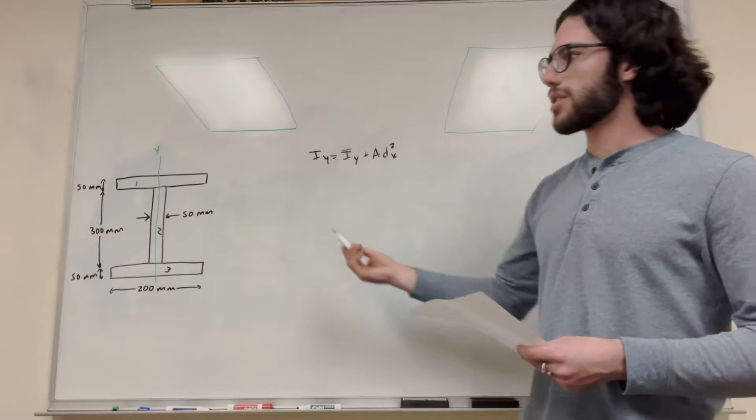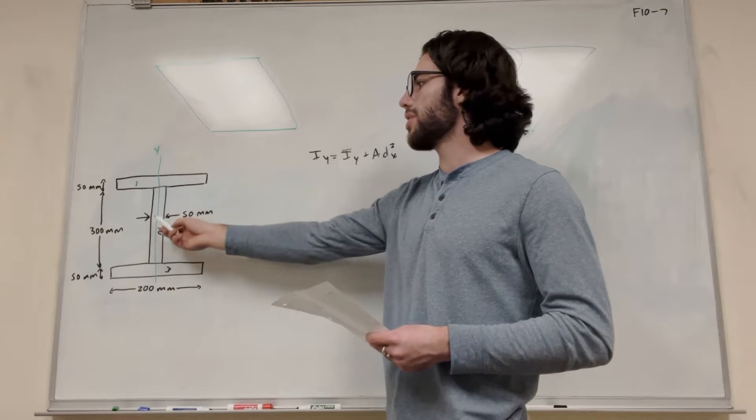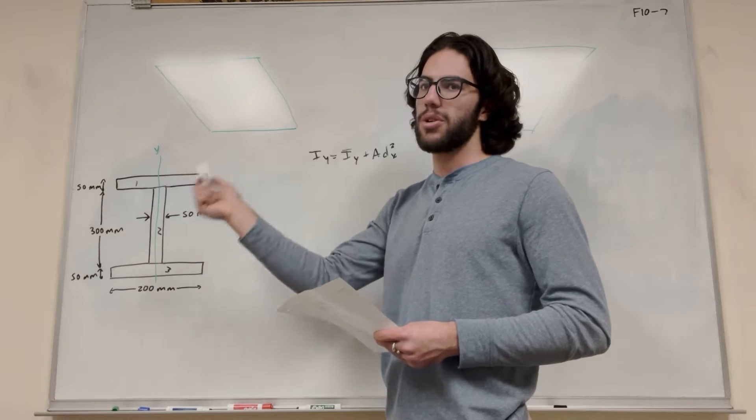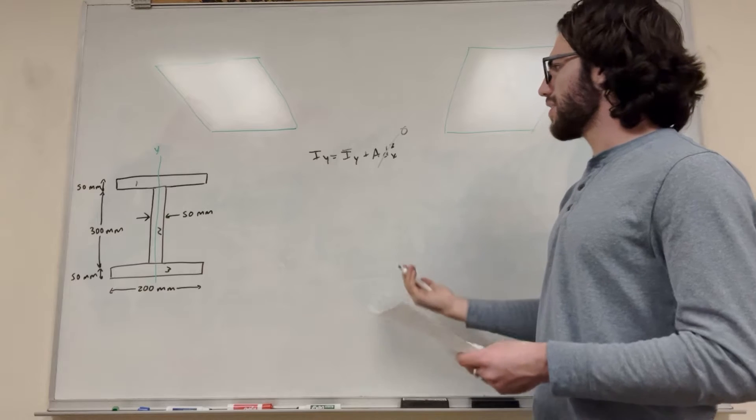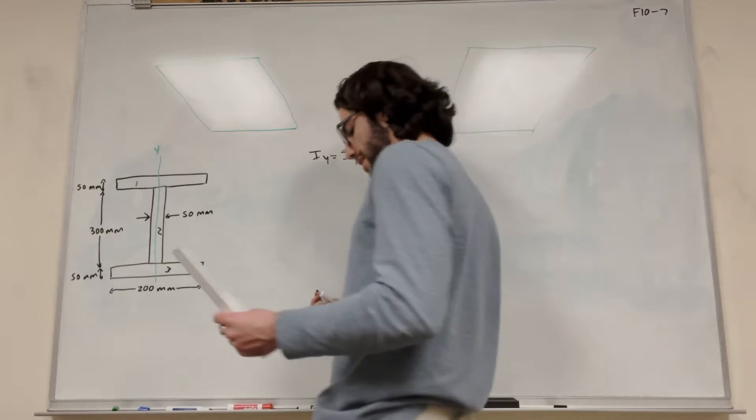But like I said, we're symmetrical across the y-axis, which means that the center of mass for each one of these - one, two, and three - lies on the axis that we're rotating around, which makes distance x equal to zero. And if distance x is equal to zero, then all we're going to have to concern ourselves with is I-bar y.